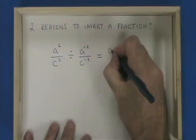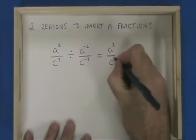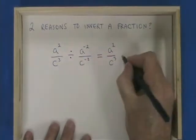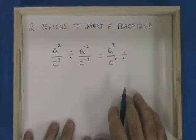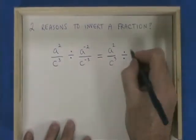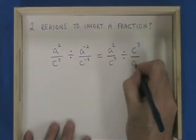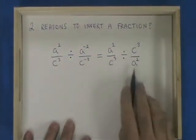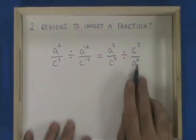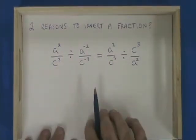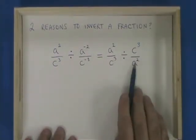That means that my division sign is still going to be a division sign. I am not dividing fractions yet. The c to the negative 3 ends up on the top, and the a to the negative 2 ends up on the bottom. The negative 3 and the negative 2 have turned into positive 3 and positive 2. And in doing so, I had to invert this fraction.